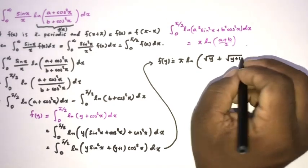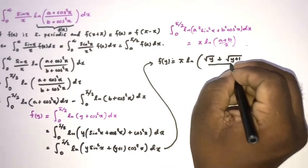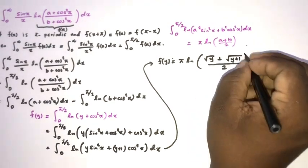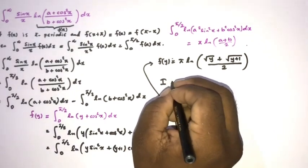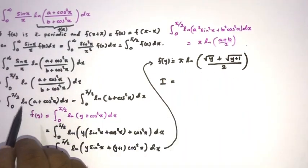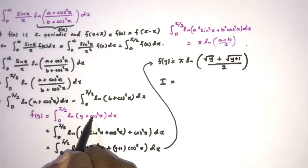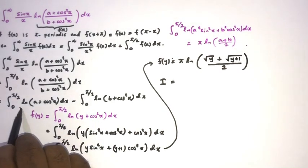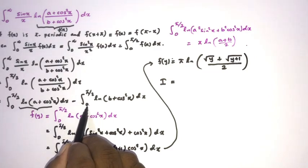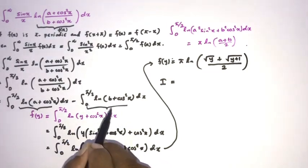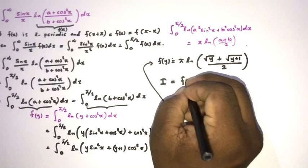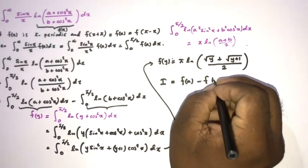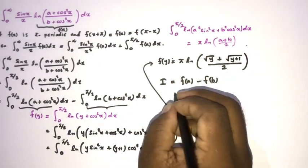Now we know our integral I is equal to f(a) minus f(b). So we can write f(a) minus f(b), substituting a and b respectively into our generalized formula.